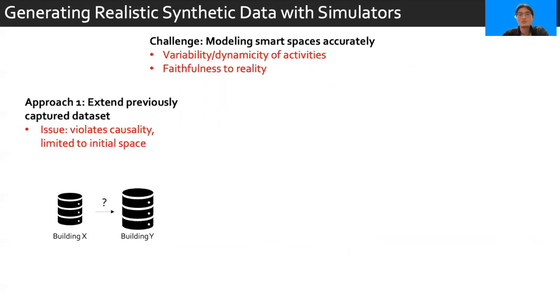Well, one way is to extend a previously captured dataset by replicating or modifying parts of the data. The issue of doing this is that it can easily violate physical laws of causality. For example, a person may suddenly appear on the fifth floor of a building without first visiting the lower floors. Additionally, exploring applicability to new, different spaces is difficult.